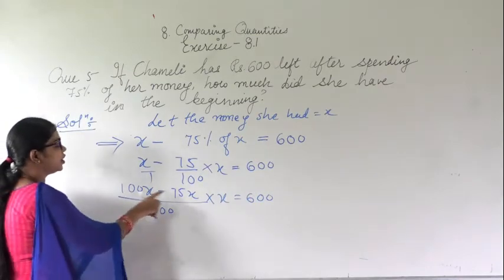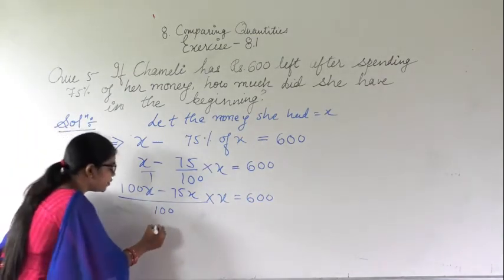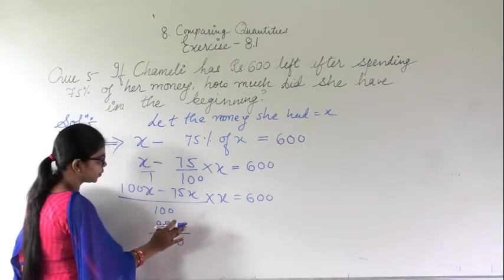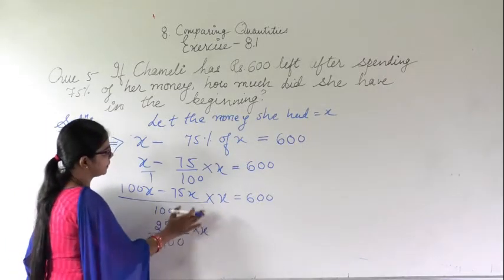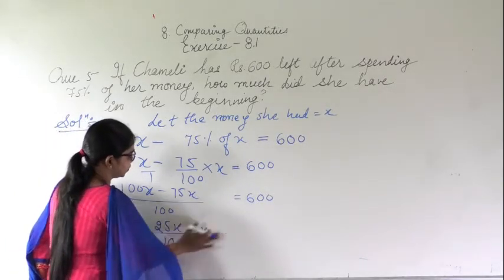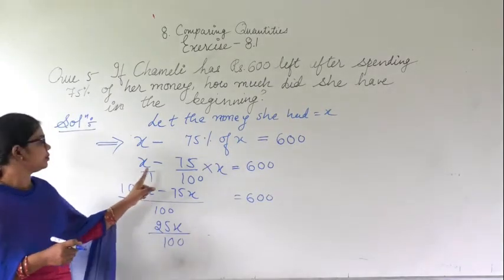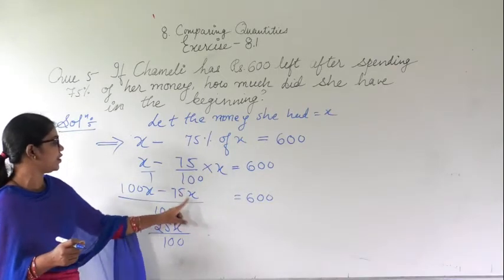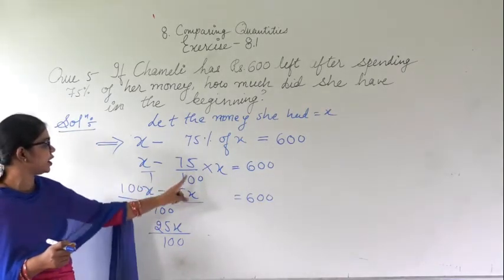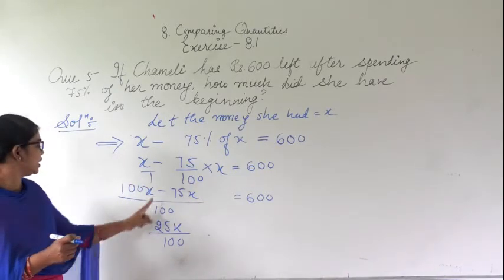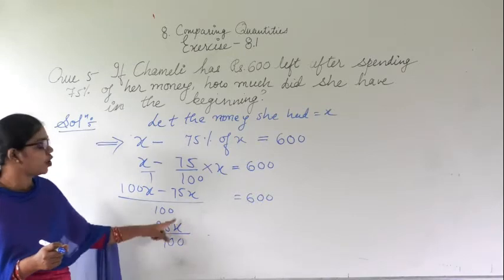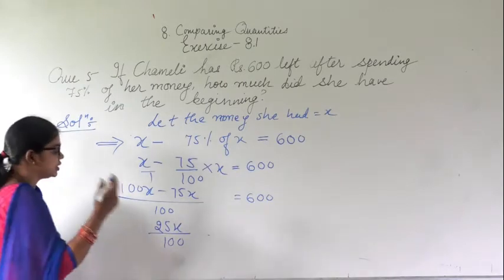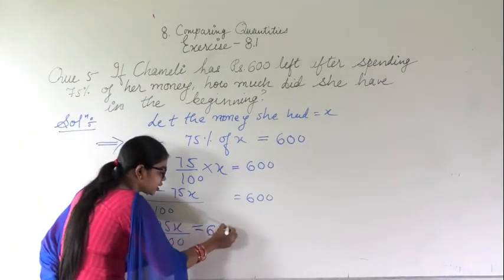So it will be x minus 75x upon 100 equal to 600. Taking the LCM, it becomes 100x minus 75x upon 100, which gives 25x upon 100 equal to 600.